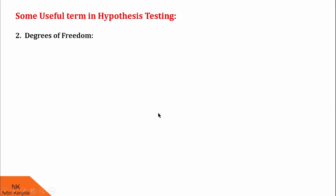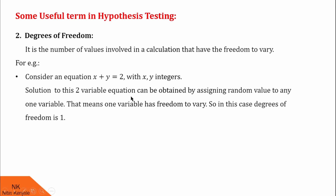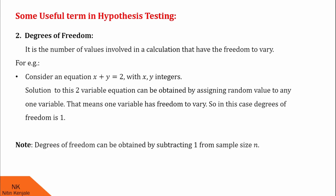Now let us proceed for the second term, which is degrees of freedom. It is the number of values involved in a calculation that have the freedom to vary. For example, consider the equation x plus y equals 2 with both x and y as integers. The solution to this two-variable equation can be obtained by assigning a random value to any one variable, meaning one variable has freedom to vary. So in this case, degrees of freedom is 1. Similarly, you can find the degrees of freedom for any given sample by subtracting 1 from the sample size.